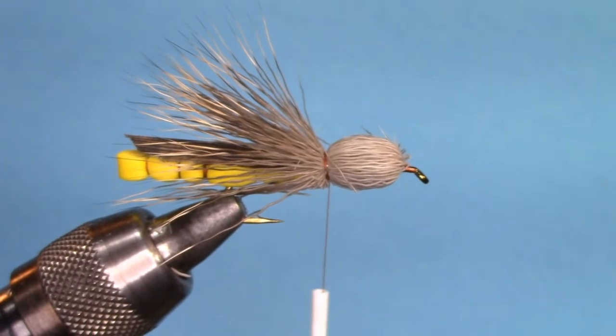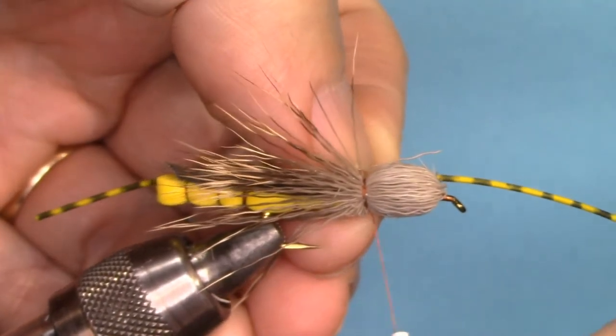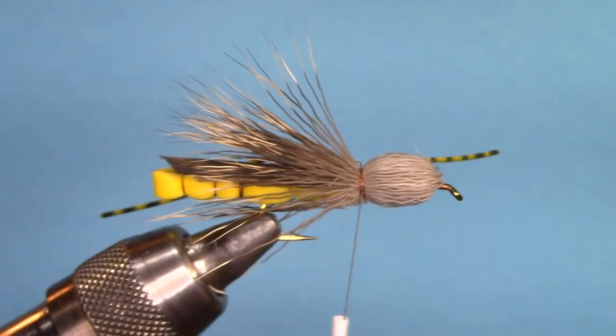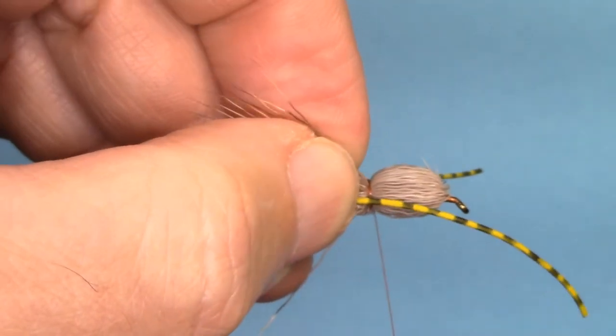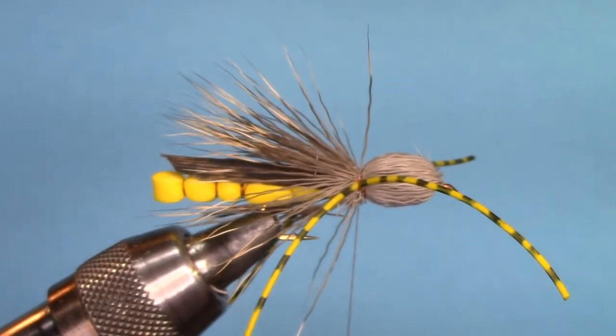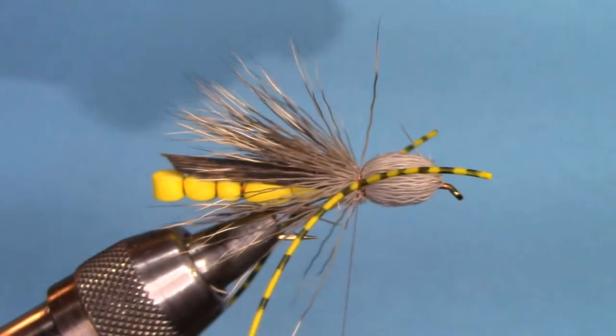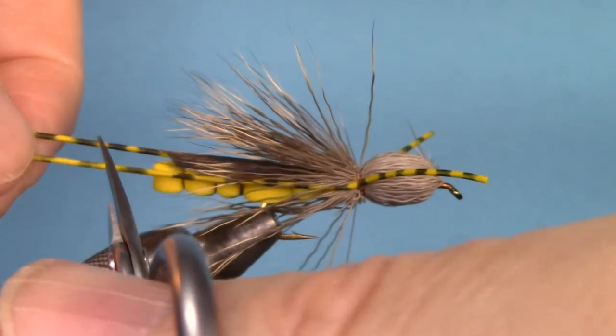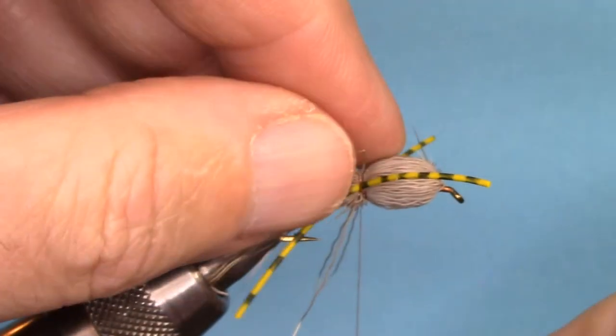Now we'll attach the rubber legs. I'm just using round rubber legs. I'll attach one strand to the far side and I'll attach another one to the near side. Then I'll trim these to length. The front ones I don't want as long as the back ones. Back ones I would like to at least come to the end of the hook. Now I have the legs attached.